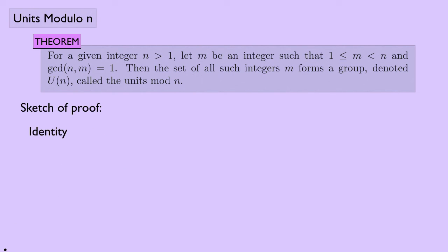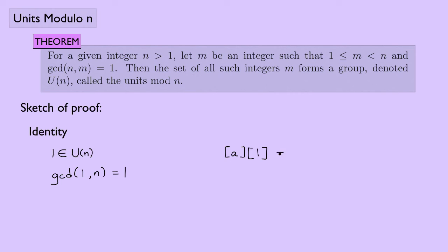For the identity element: we saw that 1 acts as our identity. We know 1 is in U(n) because 1 ≤ 1 and GCD(1, n) = 1 always. And multiplying anything a by the equivalence class of 1 gives [a]·[1] = [a·1] = [a]. So we have an identity element in the set.